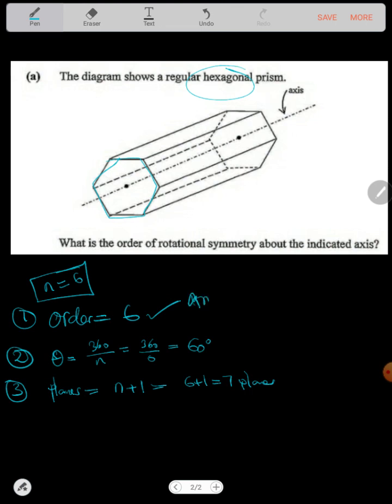Now they have asked about the order. The order, just count the number of sides - they are only 6 because it's a hexagon, so that's the answer there. If they ask you to describe fully the rotational symmetry, you talk about the order, the angle of rotation, and the planes of symmetry, but they only wanted the order, and the order is 6, just the number of sides.